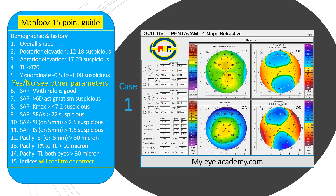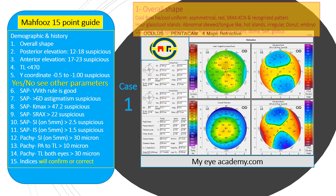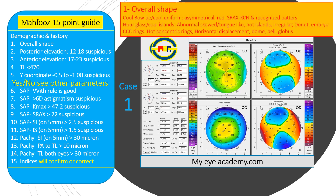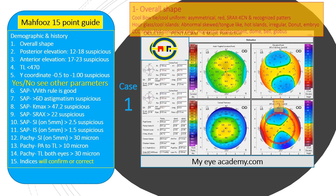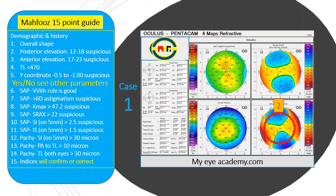We start with case number one. The overall shape is a cool bow tie on the sagittal map, cool islands on the elevation map, and central cool concentric rings on the pachymetry map — all of them are normal patterns. Number two is the posterior elevation: it is less than 12 in all areas, so it is again normal.